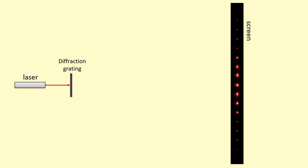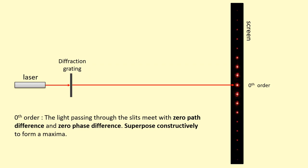So you can see you've got this pattern being formed. The central one is called the zeroth order. The zeroth order is formed when the light passing through the slits, through all the different slits, meets with zero path difference because they all travel the same distance. So the phase difference is also zero, and they superpose constructively. Then you have the first order just to the left and right of it, above and below.